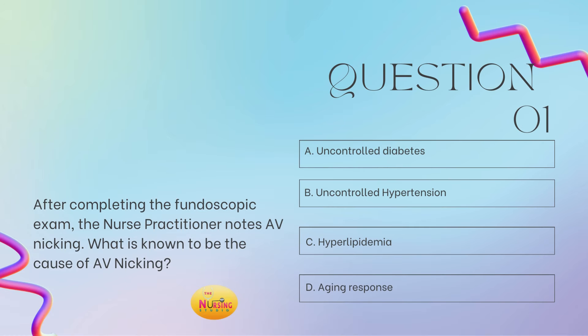After completing the fundoscopic exam, the nurse practitioner notes AV nicking. What is known to be the cause of AV nicking? Is it A, uncontrolled diabetes? Is it B, uncontrolled hypertension? Is it C, hyperlipidemia? Or is it D, natural aging response? Take a moment to tell me what you have in the comments.